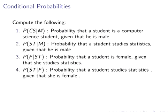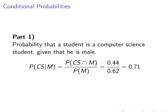So what we're going to do is work on these four examples here. Probability of CS given M, probability that the student is a computer science student given that he is male. ST given M, probability that the student studies statistics given that he is male. F given ST, probability that a student is female given that she studies statistics, and the probability that a student studies statistics given that she is female, ST given F.